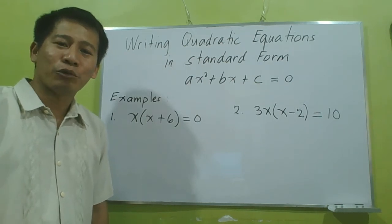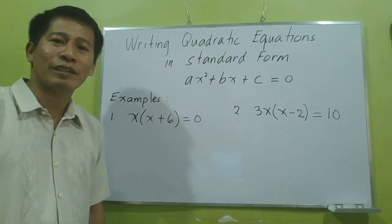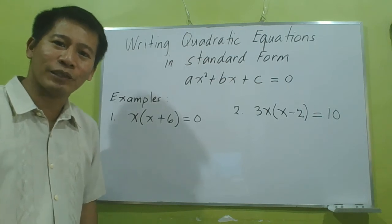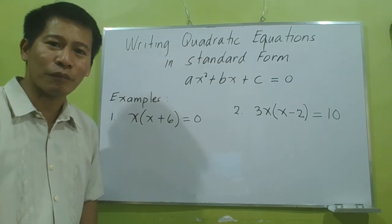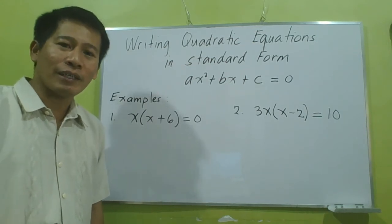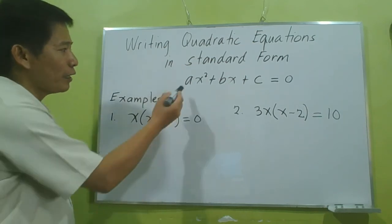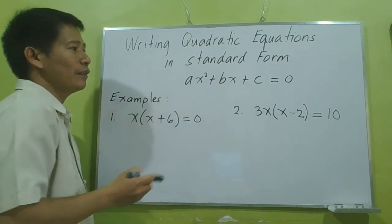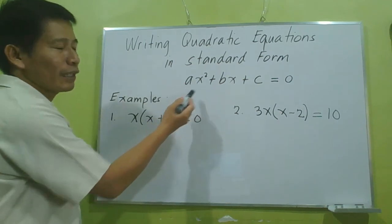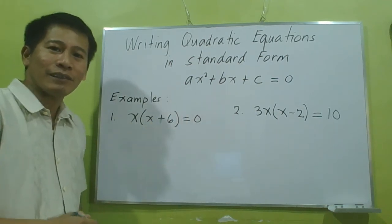you will learn how to write quadratic equations in standard form: ax² + bx + c = 0. Remember, you can only identify the values of A, B, and C in any quadratic equation if it is written in the standard form.